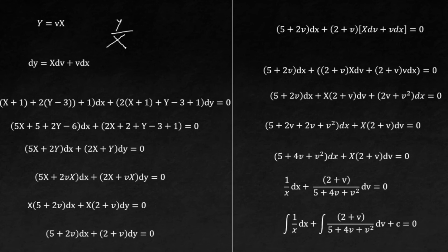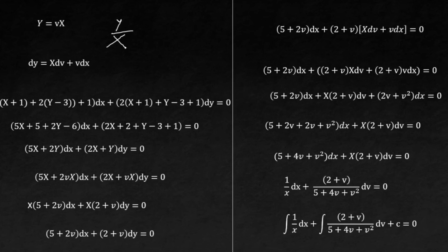To summarize Case 1: first, confirm the equation is linear but not homogeneous. Second, set up and solve the simultaneous equations. Third, insert your big S and big Y using the h and k values. Fourth, use the homogeneous method by substituting big Y = v·big S. Finally, remember to back-substitute to present the answer in small s and small y.